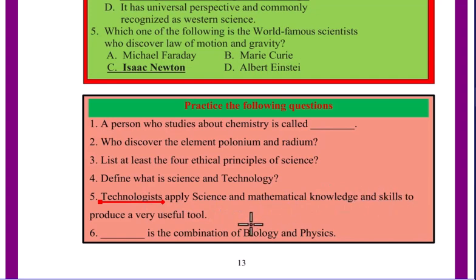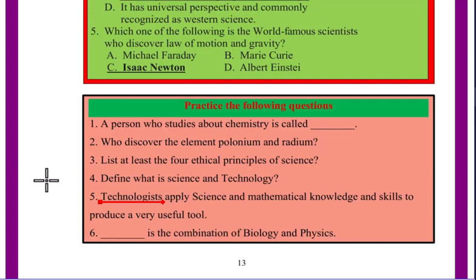Technologists apply science and mathematical knowledge and skills to produce useful tools. This is a combination of biology and physics, geology and physics, chemistry and physics — the principles we learn from science and technology. Please subscribe to the channel, comment in the Telegram comment section. Thank you very much.